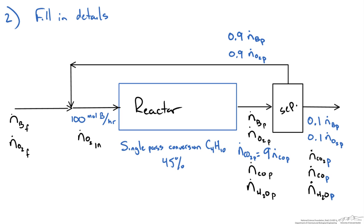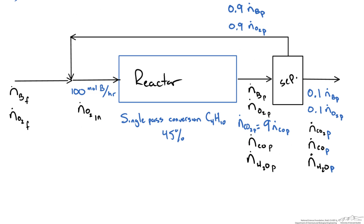Now that we have most of the information in our schematic, we can start setting up our material balances and figuring out what other information we need. The first part of the problem asks us to determine the composition of the product gas from the reactor — so the flow rates in the stream. Knowing the flow rates we can divide by the total molar flow to get our composition, but we have 5 unknowns, so we need to determine some of these before we can solve our material balances.